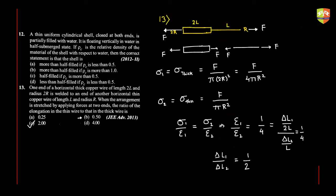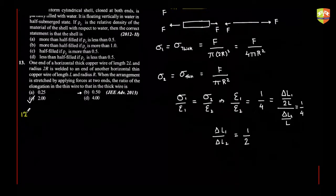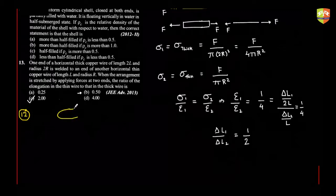Now let us try to solve question 12. Question 12 is one of those questions which distinguishes toppers from others. It's not a straightforward one — there are a lot of fine things which people ignore. So a thin uniform cylindrical shell closed at both ends is partially filled with water.